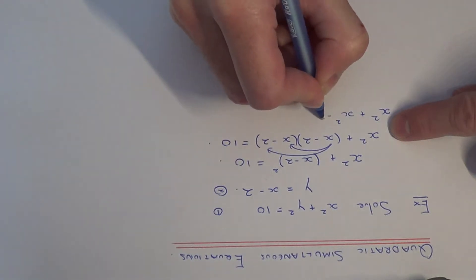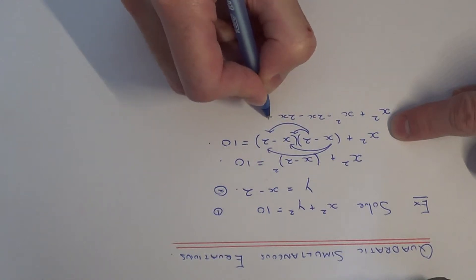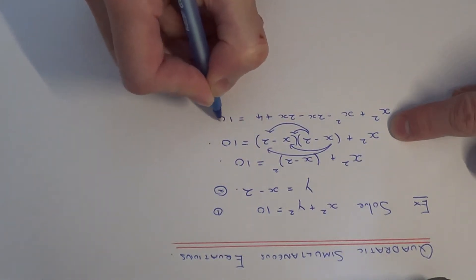x times minus 2 is minus 2x, minus 2 times x is minus 2x, minus 2 times minus 2 is plus 4, and that's equal to 10.